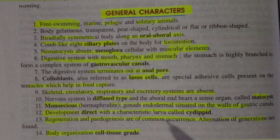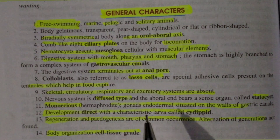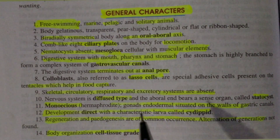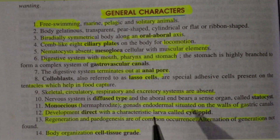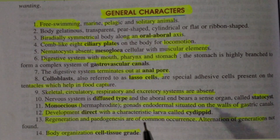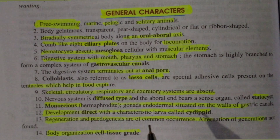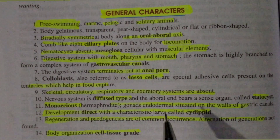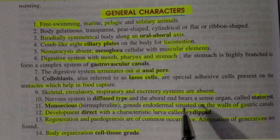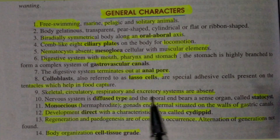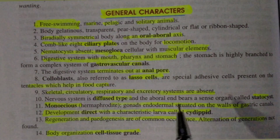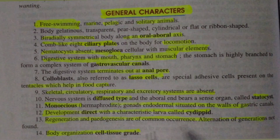The nervous system is of the diffuse type (tantrika tantra bishrit prakar ka hota hai). The aboral end bears a sense organ — the aboral end is the end found just behind the mouth. At this aboral end, sense organs called statocysts are present.